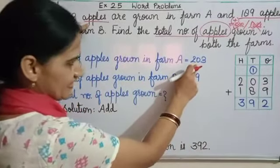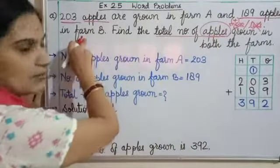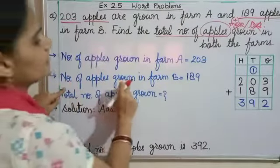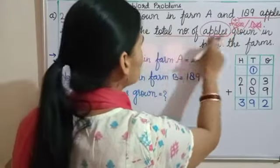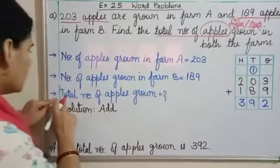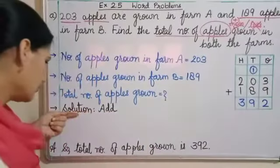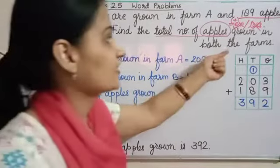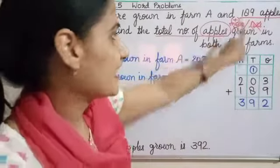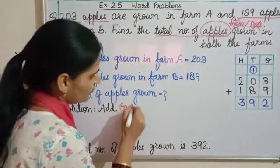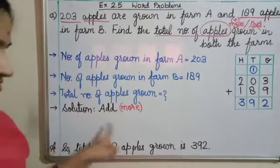Apples humara item name hai aur apples hum count kar sakte hain. Toh count karne wali cheese ka statement hum 'number of that item' se start karte hain. Number of apples grown in farm A is 203. Yeh humne pehli information ke liye statement di. Doosri information hai 189 apples ke liye — farm B mein. So next statement: Number of apples grown in farm B is 189. Jo humne circle kiya — apples — woh pooch raha hai total number of apples grown. Because the collection is getting more, we know that it is a question of addition.